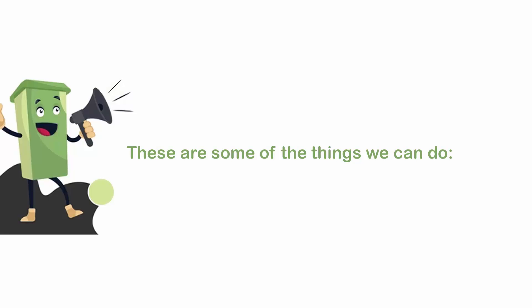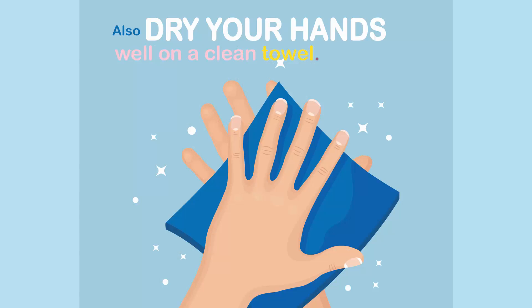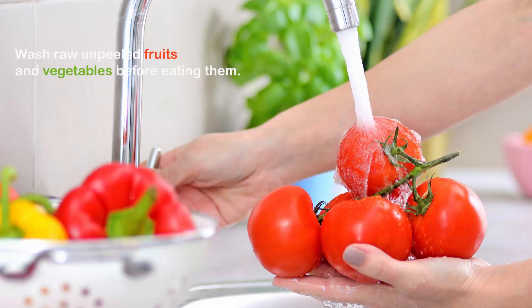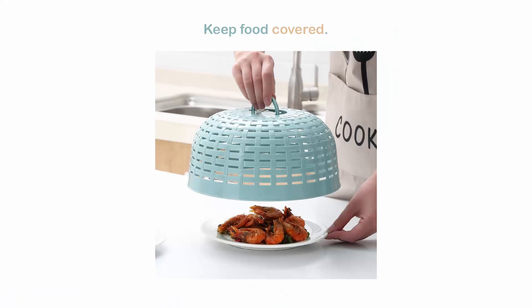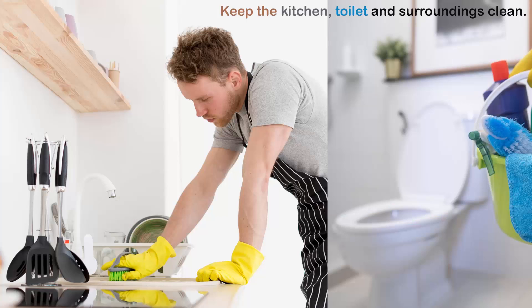These are some of the things we can do. Wash your hands with soap and water before eating or working with food, and after going to the toilet. Also dry your hands well on a clean towel. Wash your hands after handling animals, cleaning up animal wastes or gardening. Wash raw, unpeeled fruits and vegetables before eating them. Keep food covered. Do not leave food at room temperature, especially when the weather is hot, as bacteria and fungi grow faster when it is warm. Keep the kitchen, toilet and surroundings clean.